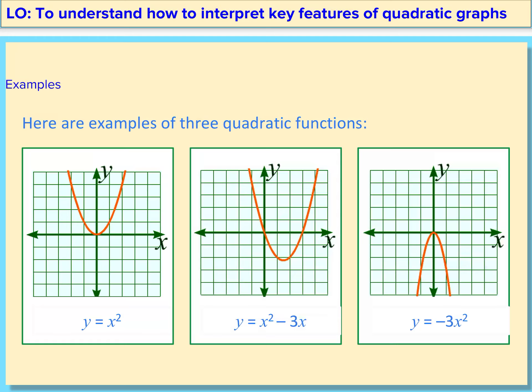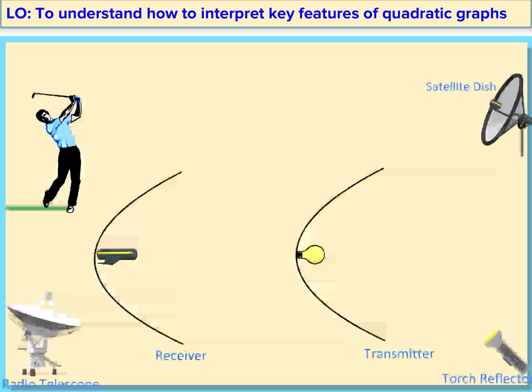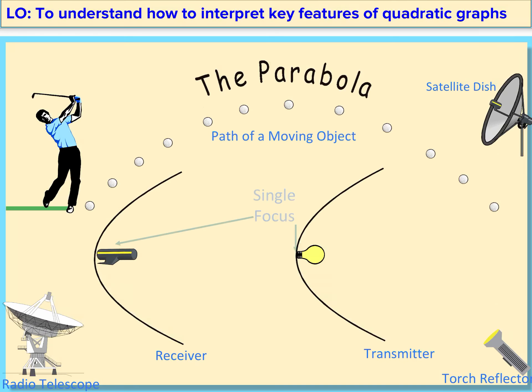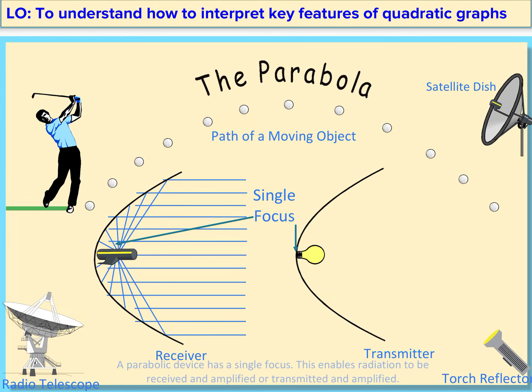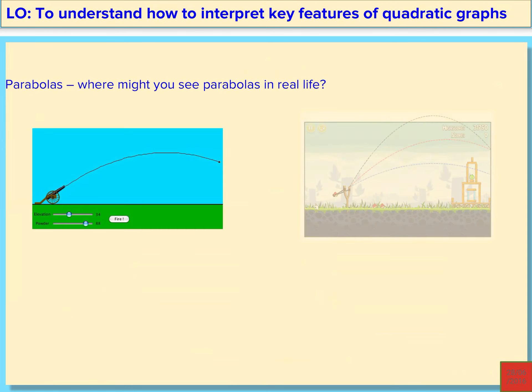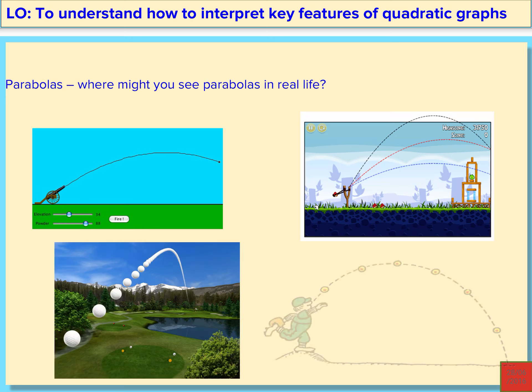Here are some examples of quadratic functions. Here is the first one, y equals x squared. Y equals x squared minus 3x, and you can tell all of them are positive quadratic graphs because they're in that u shape. Y equals negative 3x squared. As you can see, it is a negative because the graph is in a shape of an n.